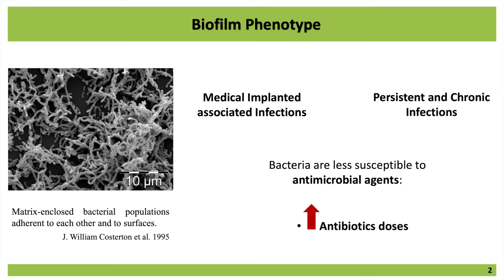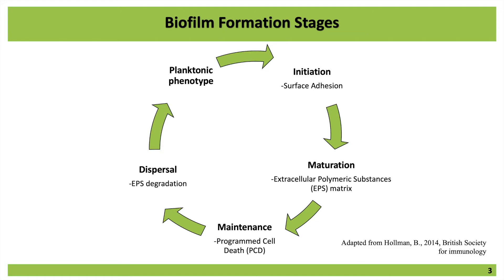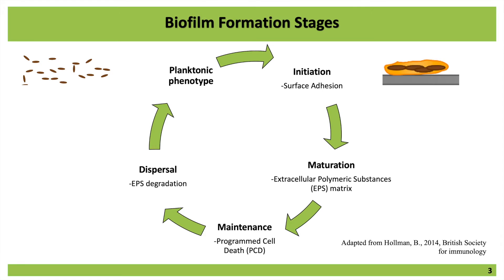As bacteria are a lot less susceptible, the antibiotic doses need to be very elevated to try to eliminate these biofilms, and sometimes it's impossible to do so. To understand the best approach to eliminate biofilms, we should know how a biofilm is formed. To form a biofilm, we start with planktonic cells and these will start adhering to a surface and to themselves in the stage known as the initiation stage.